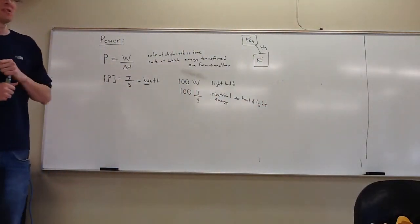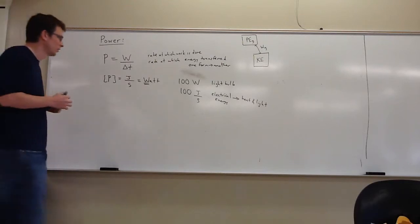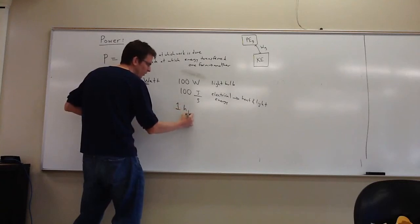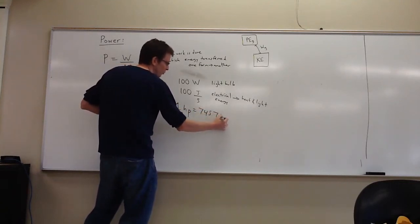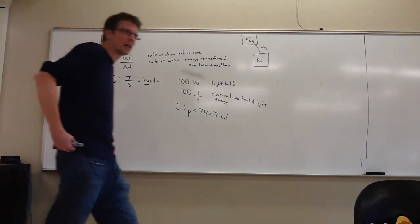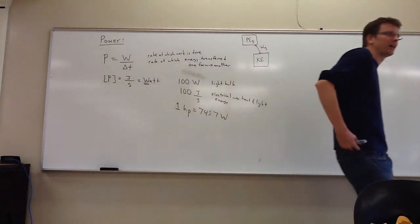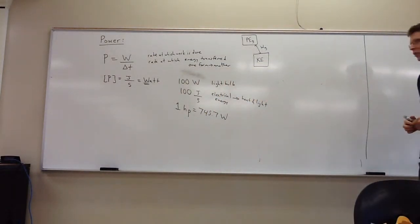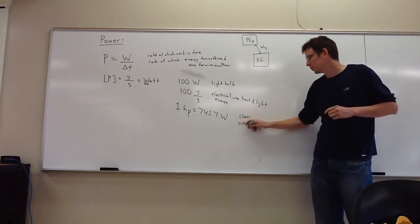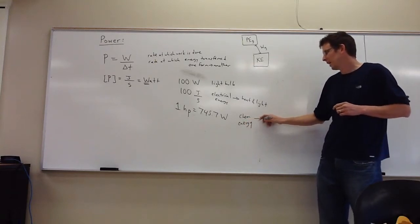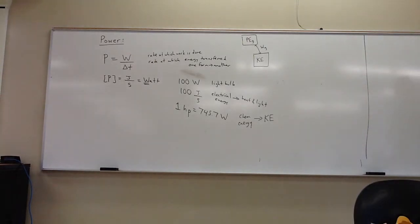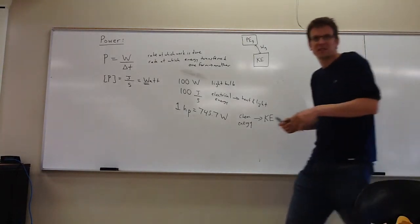The English system unit of power, so non-SI, is called horsepower. So one horsepower is 745.7 watts. You may know, for instance, that car engines are rated by horsepower. So what are they transferring between? They're transferring between the chemical energy in the fuel. And in this case, the destination of that energy we can well understand. It's just good old kinetic energy of motion. So we're going faster. The car is going faster.